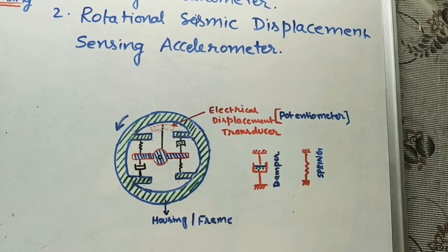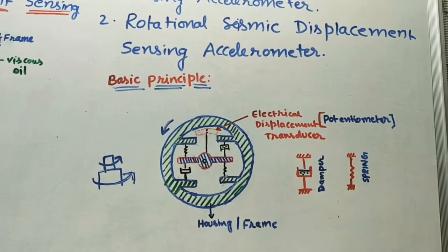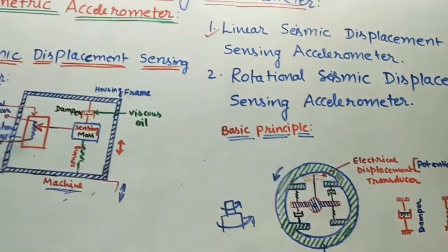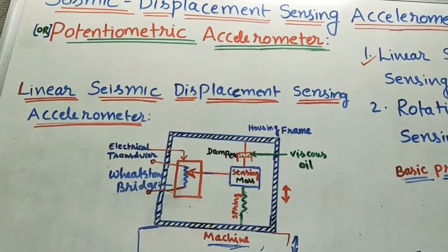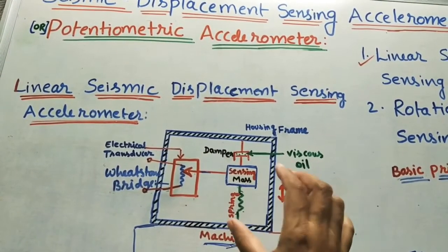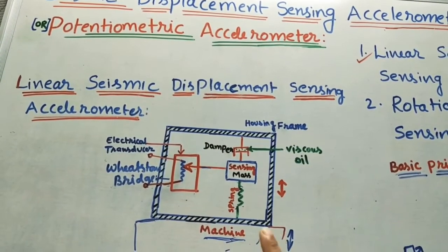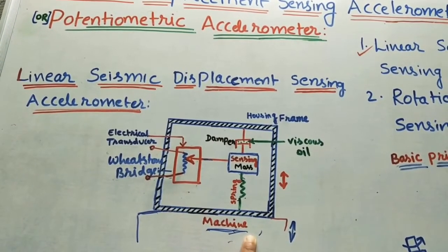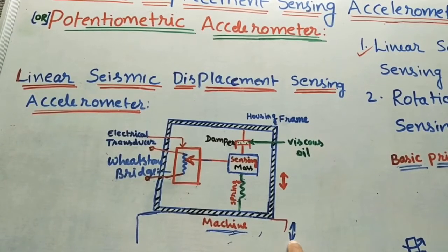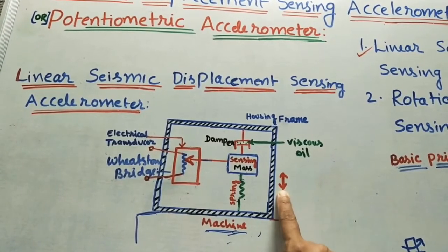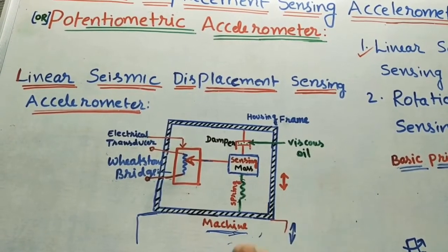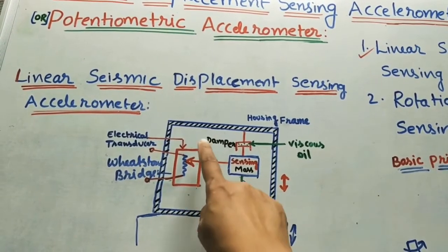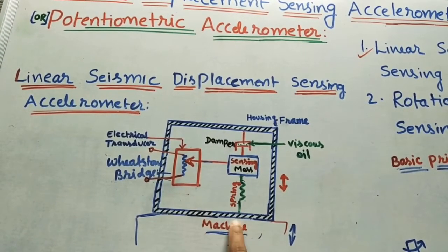Because of this rotation, we call it the rotational seismic displacement sensing accelerometer — it finds the vibrations of a rotating machine. Now let us take the basic principle of this accelerometer. Inside the accelerometer we keep some mass, some weight. Because of the vibration of a machine on which we keep the accelerometer, the accelerometer will also vibrate, and because of this the mass will also vibrate. The displacement of the mass will measure the vibrations using the electrical transducer.